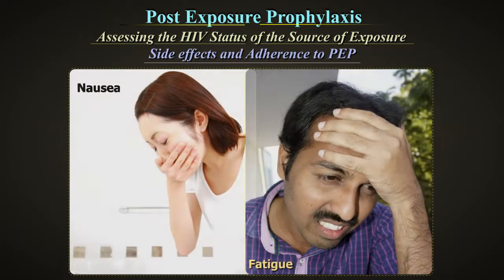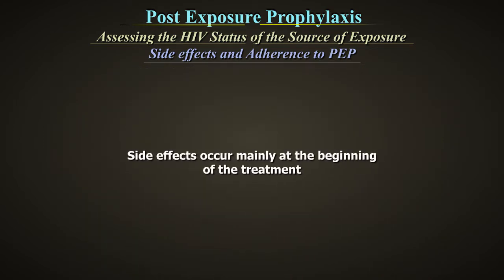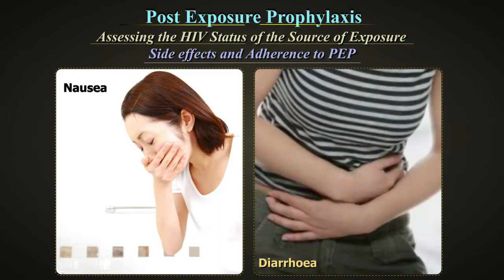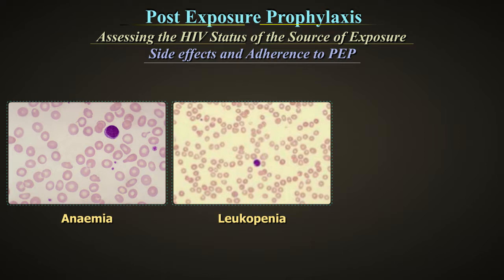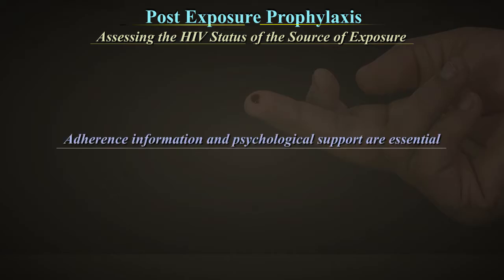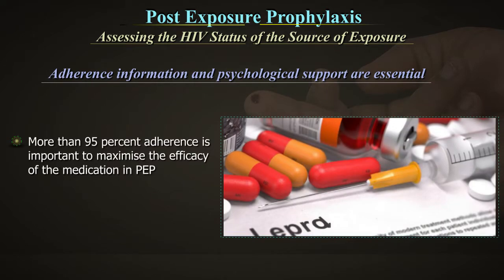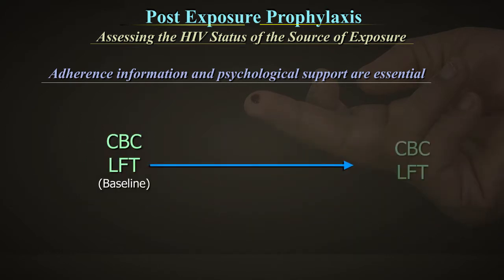Side effects and adherence to PEP: studies indicate more side effects, most commonly nausea and fatigue, among healthcare professionals taking PEP than PLHAs taking ARTs. These side effects occur mainly at the beginning of treatment and include nausea, diarrhoea, muscular pain and headache. Anaemia, leukopenia and/or thrombocytopenia may occur during the month of treatment. More than 95% adherence is important to maximise efficacy. Side effects can be reduced through medications. A complete blood count and liver function test may be performed at baseline and after 4 weeks.